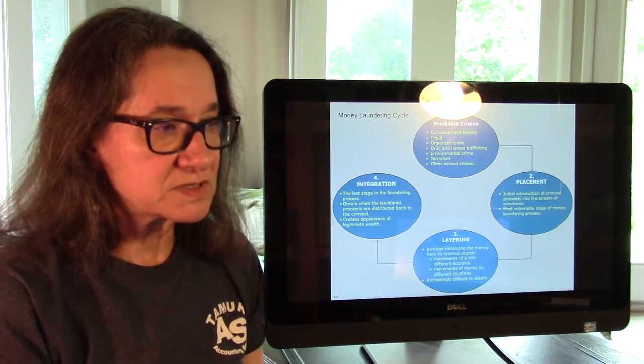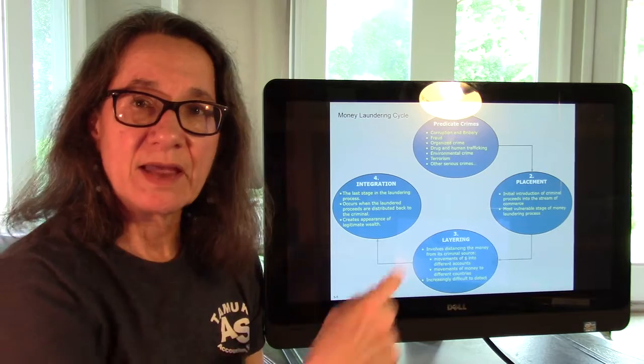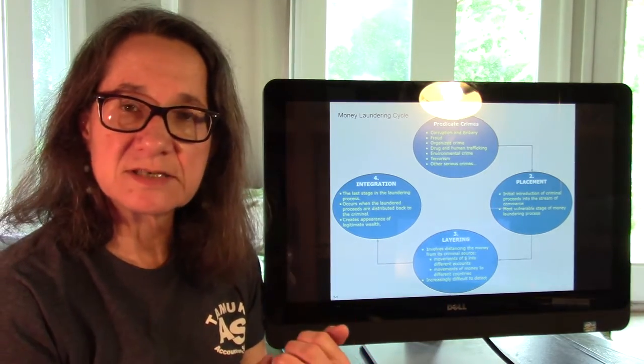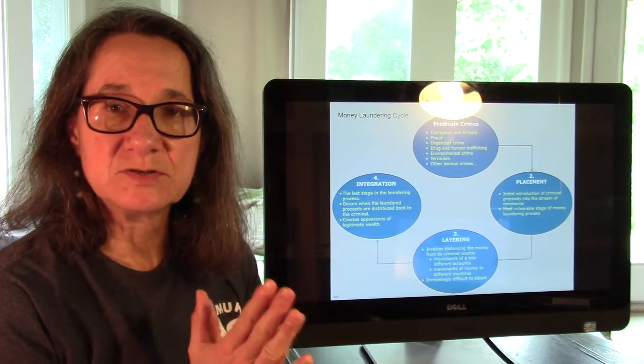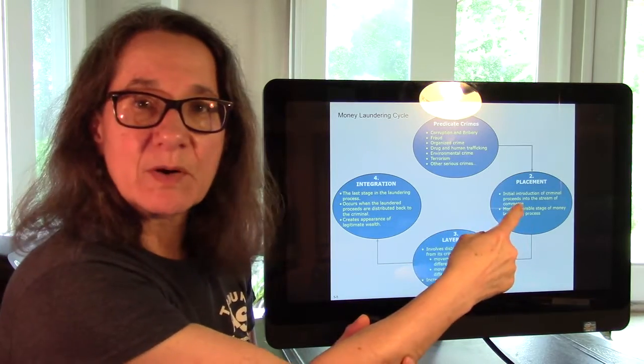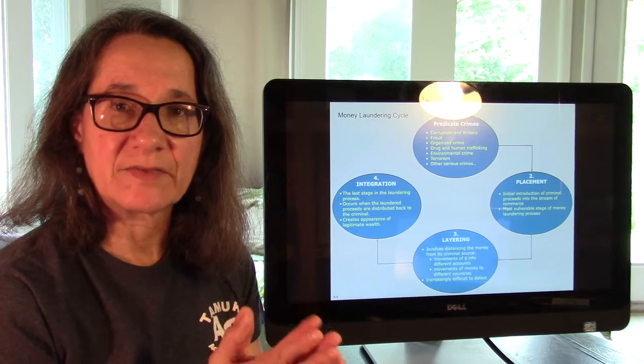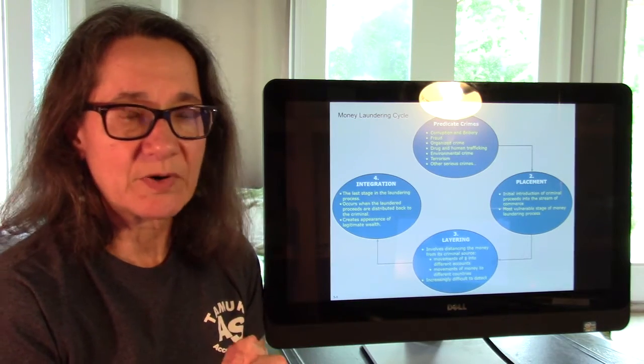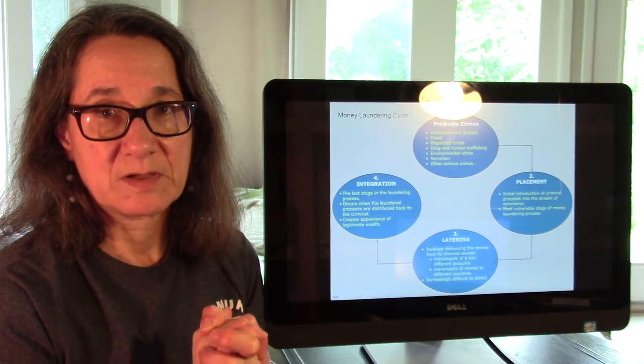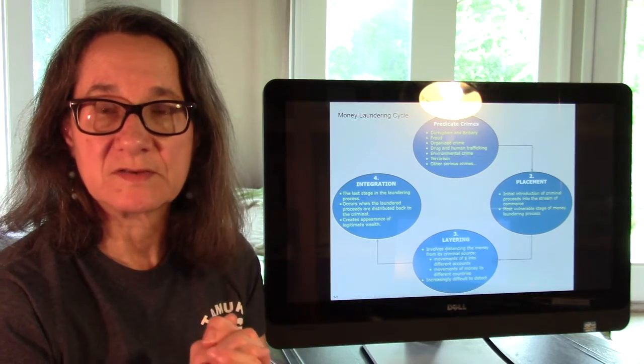So those four steps are important to understand because we need to understand when we break it up. In our next lecture we're going to talk about the Bank Secrecy Act and what financial institutions are required to do to basically for this placement part. Because the first placement is where we're going to catch them, where we're going to fill out the forms, we're going to notify FinCEN. That placement part is where we're typically going to be able to stop the money laundering. Once it's in the bank, once it's in the system, then it's getting sent all around by wire transfers and it's hard to catch.